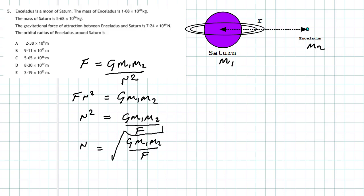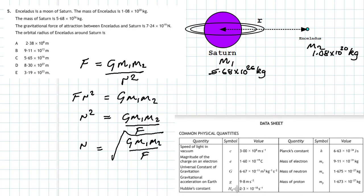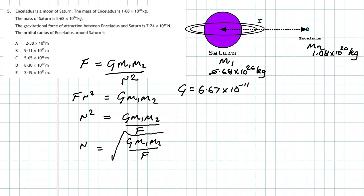Now we plug in the numbers. The mass of Saturn M1 is 5.68 times 10 to the power 26 kilograms. The mass of Enceladus M2 is 1.08 times 10 to the power 20 kilograms. The universal gravitational constant G can be found in the data book: G equals 6.67 times 10 to the minus 11. Since it's multiple choice, don't worry about units.